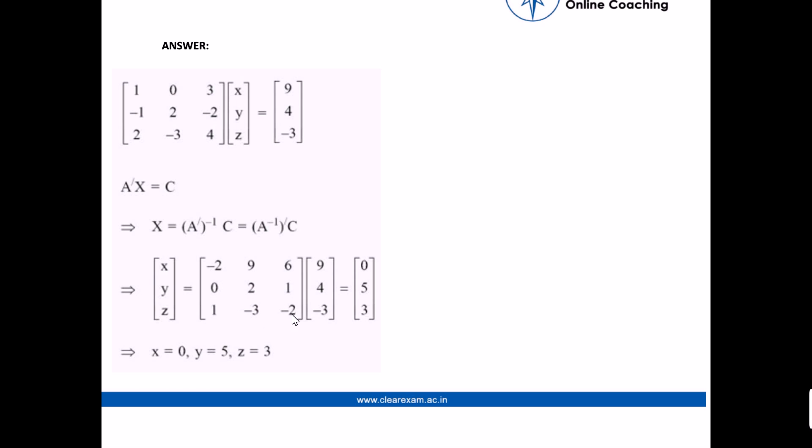times [9; 4; -3]. After multiplication we get [0; 5; 3].